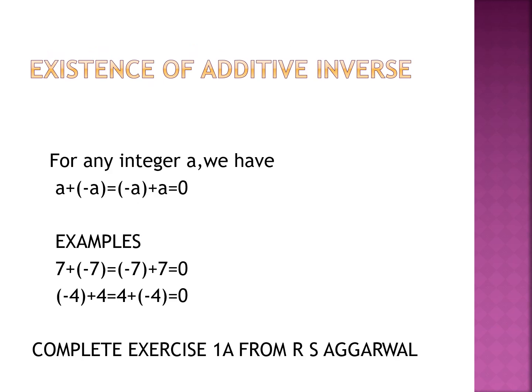Now the fifth property — the existence of additive inverse. For any integer there is an opposite. For any integer a, a plus (−a) equals (−a) plus a equals 0. For example, 7 plus (−7) equals 0, and (−7) plus 7 also equals 0. Similarly, (−4) plus 4 equals 0 and 4 plus (−4) also equals 0. I hope you have understood the properties of addition and subtraction of integers.